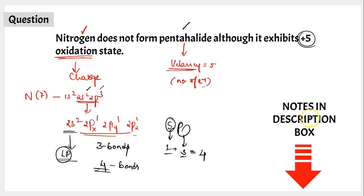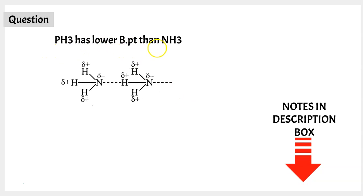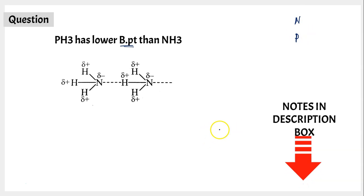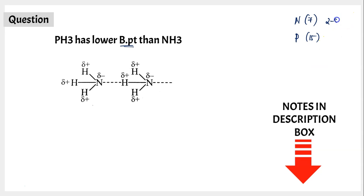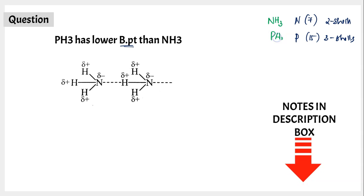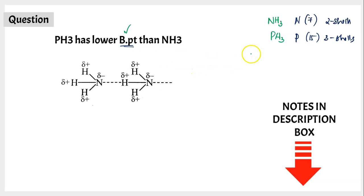In some cases oxidation state and valency coincide by coincidence, but not always — they are different concepts. Moving to question two: PH3 has a lower boiling point than NH3. We are comparing the boiling points of these two hydrides of nitrogen and phosphorus from group 15. Nitrogen has atomic number 7 with 2 shells, and phosphorus has atomic number 15 with 3 shells.